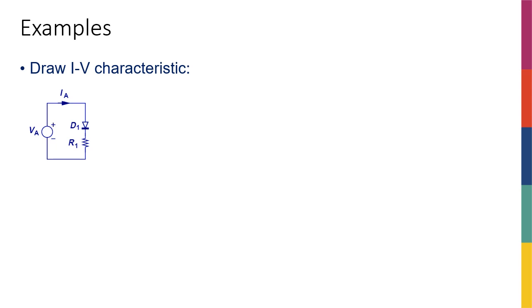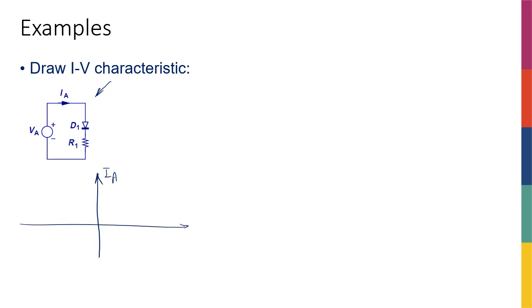Let's go ahead and solve our first circuit analysis example. In this example, a circuit containing a diode and a resistor where the voltage source is given to us, and the question is asking us to draw the IV characteristics — meaning the current of the diode versus the voltage across the diode, or specifically Ia versus Va, the current through the diode versus the voltage source.